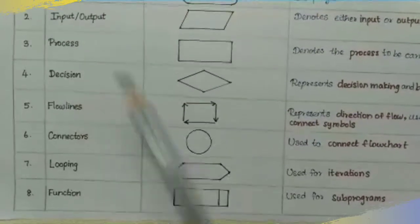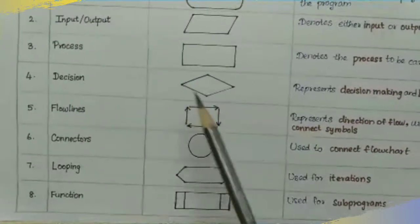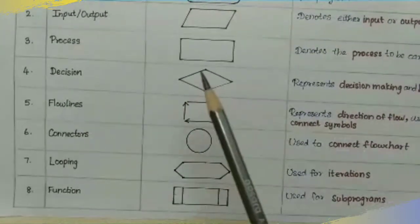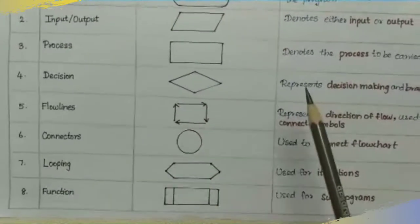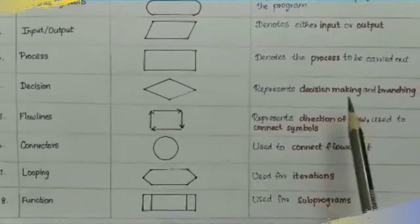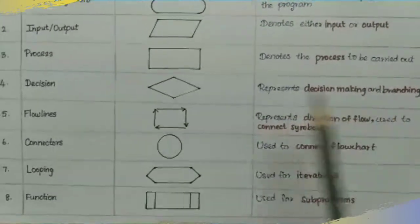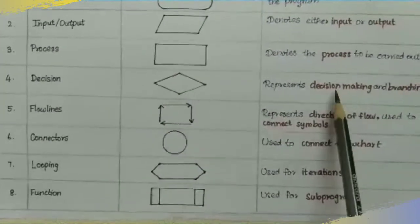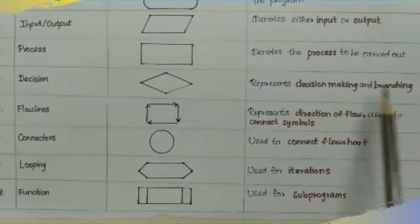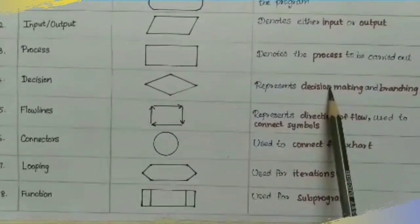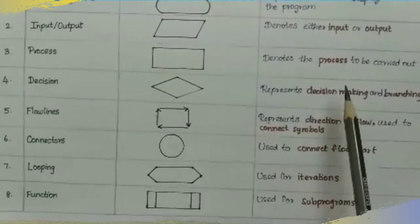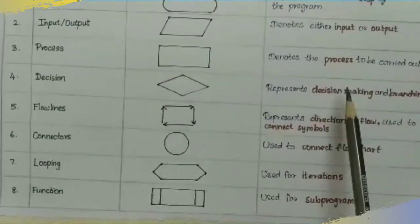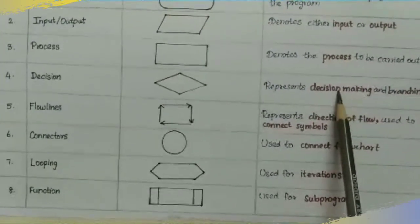The decision symbol is a diamond (kite-shaped) symbol. This represents decision making and branching. Decision making symbols include if statements and else statements — that is decision making.